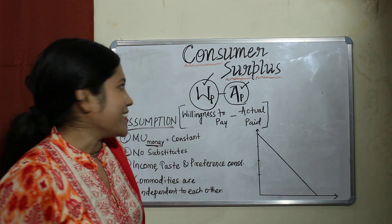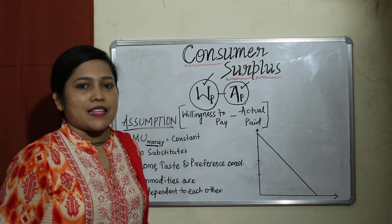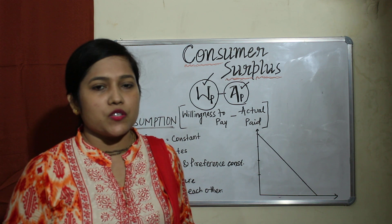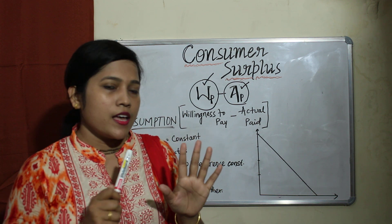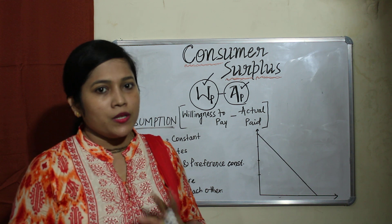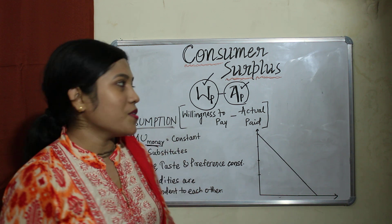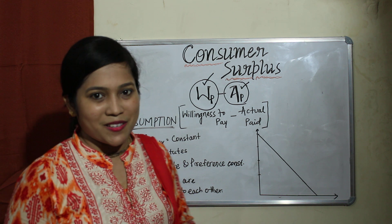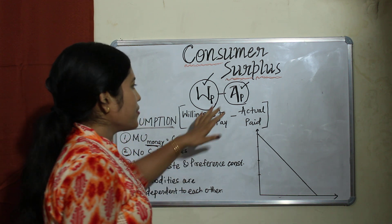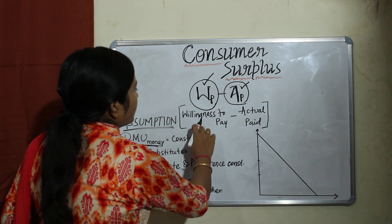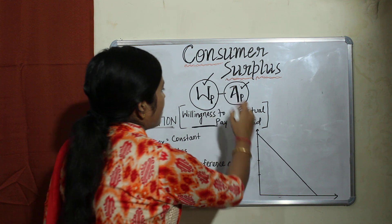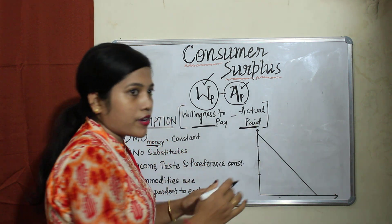So let's get started. Consumer surplus — as I have told you before moving to any economic laws, you have to consider five things: assumption, definition, graph, schedule, and limitation. So what is the definition of consumer surplus? Consumer surplus is the difference between what you are willing to pay and what you have actually paid.